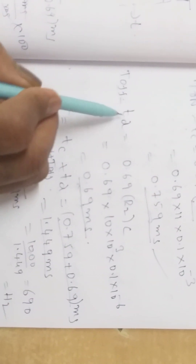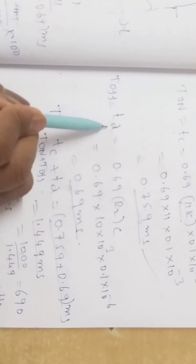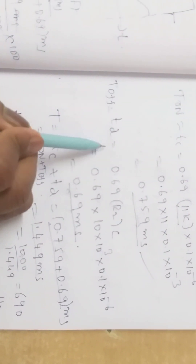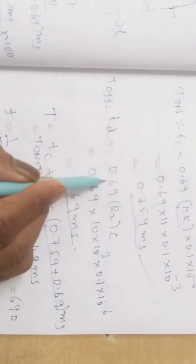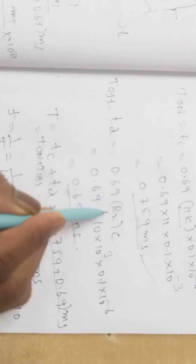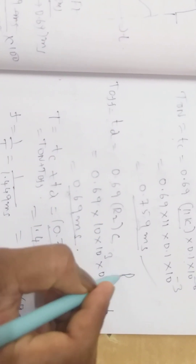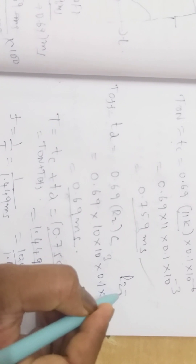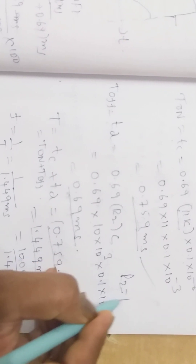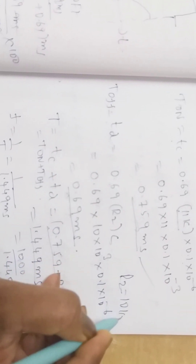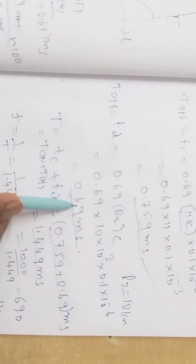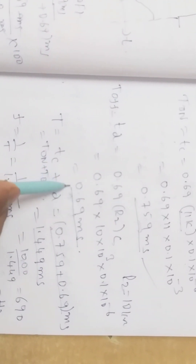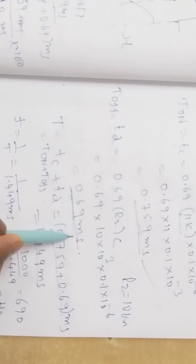T_off, the discharging time constant, is equal to 0.69 × R2 × C. We know R2 is equal to 10 kilo ohms. Substituting these values in the expression, we get T_off equal to 0.69 milliseconds.